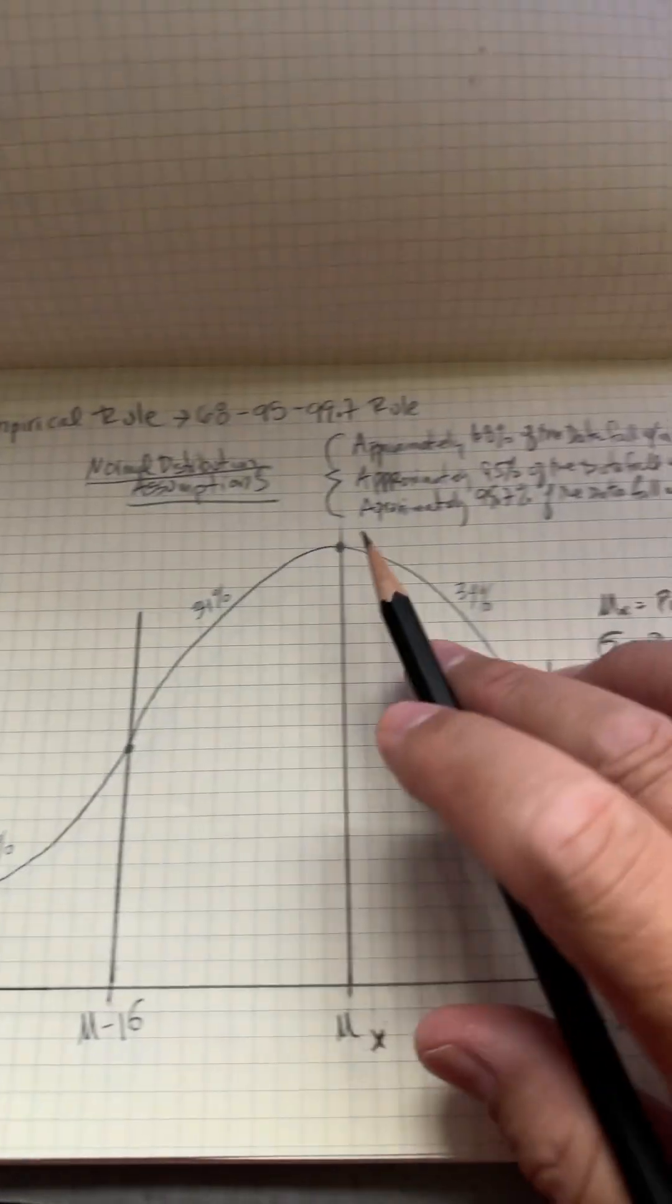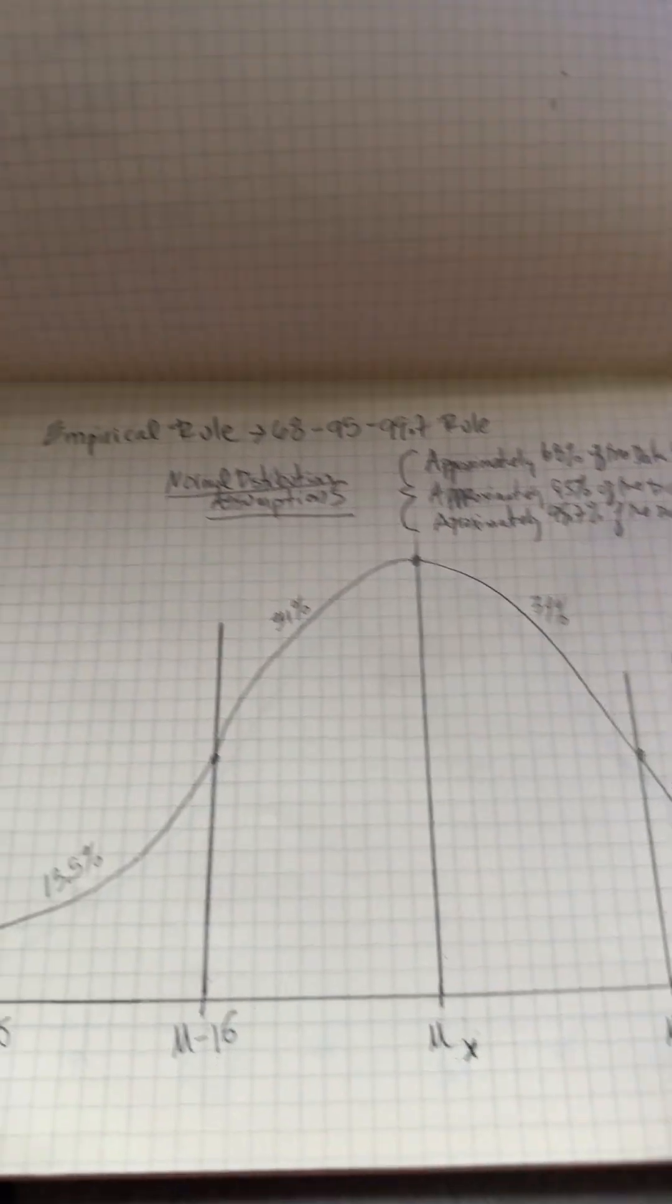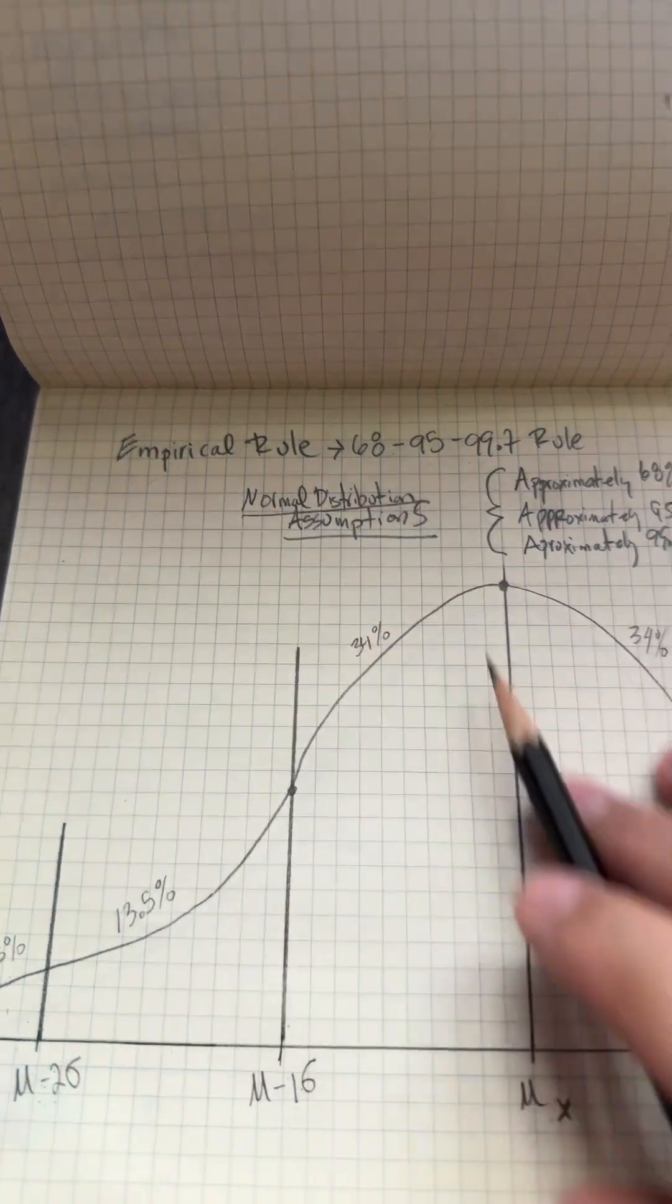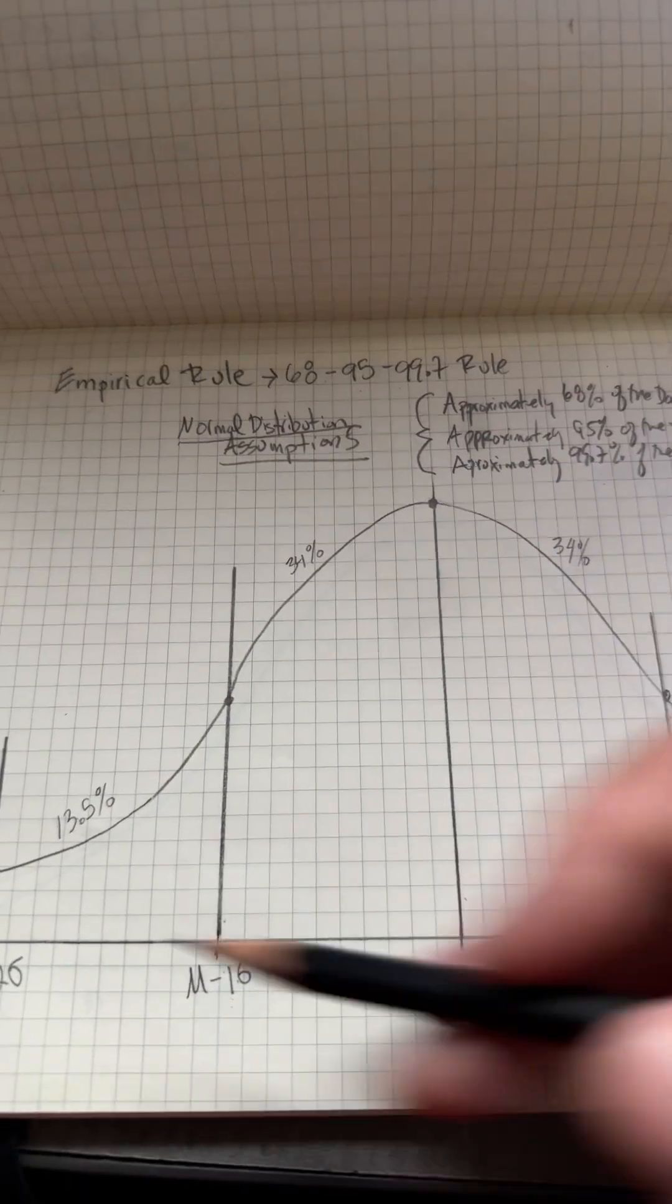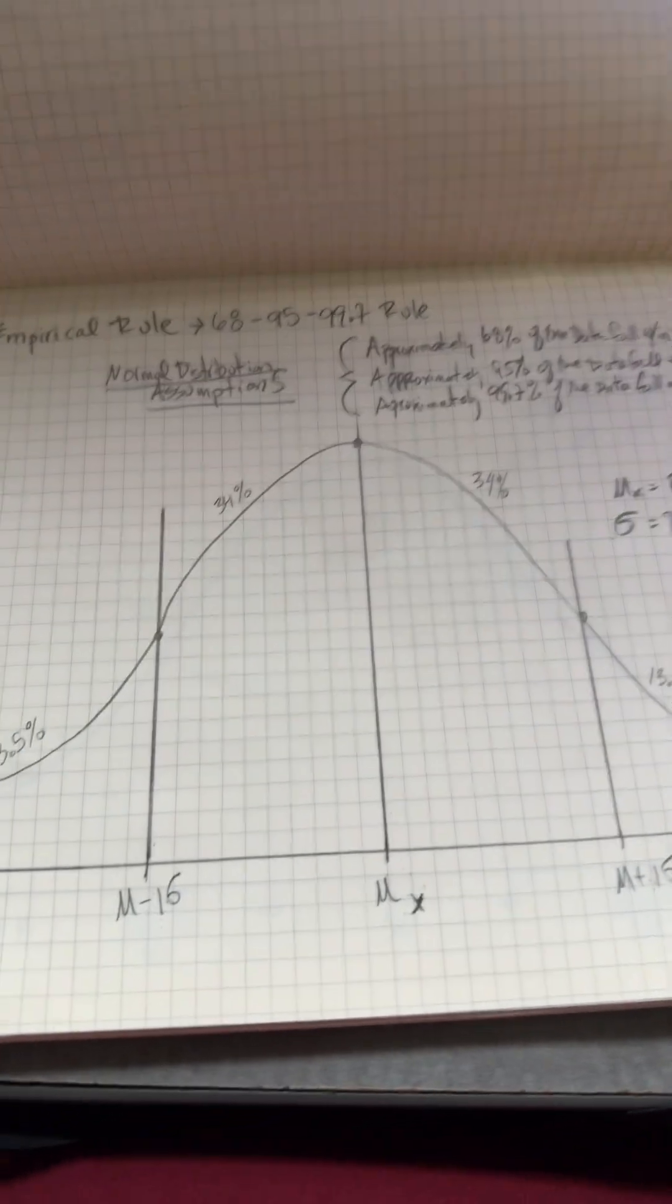To estimate the probability of the normal distribution, we can use the empirical rule, which says that we can cut the normal distribution into pieces.